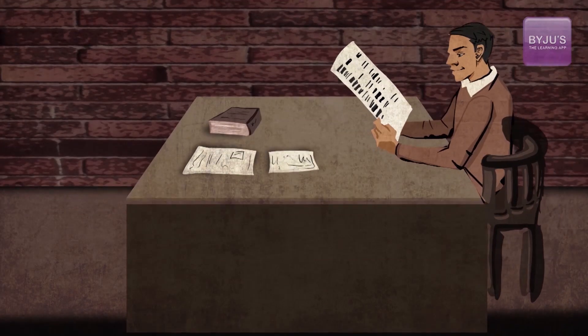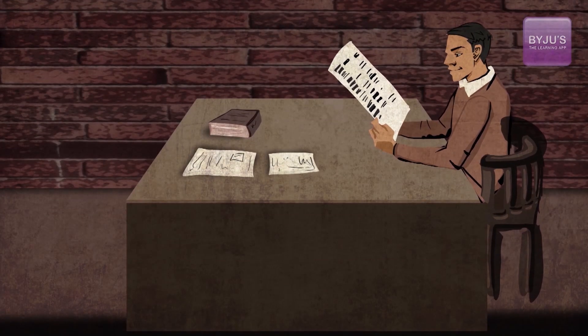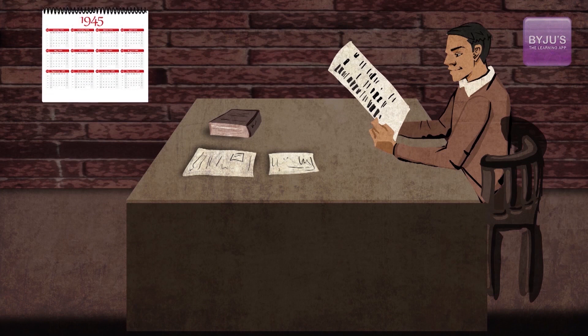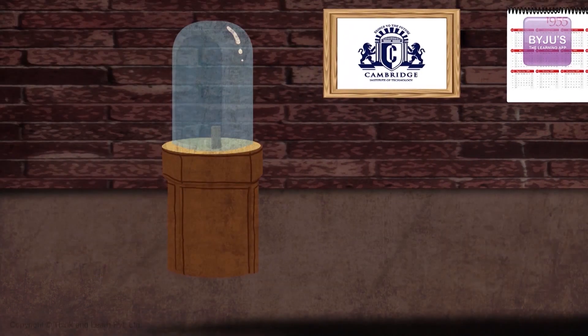Frederick Sanger had begun deciphering the primary structure of insulin as early as 1945 and it took him 10 long years of hard work in the cellars of the Biochemical Institute in Cambridge, England to accomplish it.